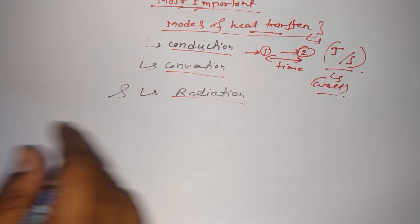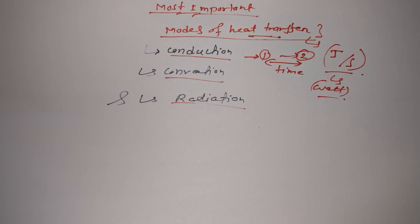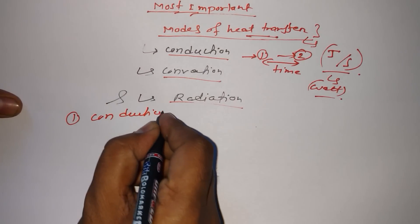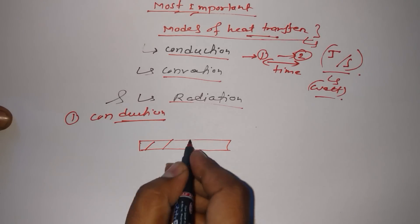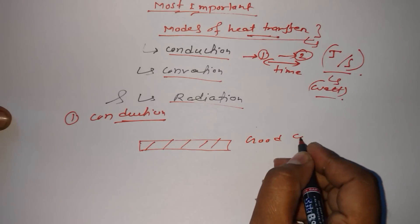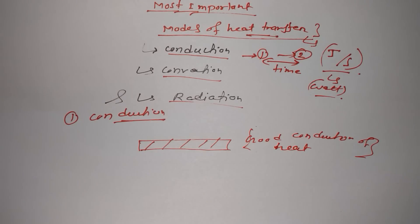If you go through the details of all these modes it will take much more time, but today I am going to share with you some basic concepts of conduction, convection, and radiation. Let's get started with conduction. What is conduction? Generally, heat is transferring in a solid — suppose we have a metallic rod. The rod must be a good conductor of heat or electricity, because in general if any metal is a good conductor of electricity, it is also a good conductor of heat.